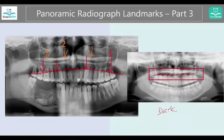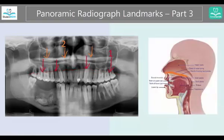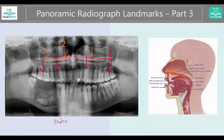Now let's look at number two. Number two is this area over here — this radiolucent area. This is the hard palate. You can see it highlighted here, and the soft palate is here, but this area — the hard palate — because it is bone, it is denser. That's why it is radiopaque. And this is the hard palate.